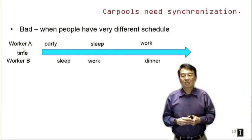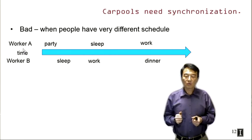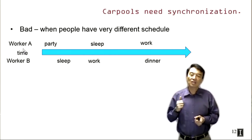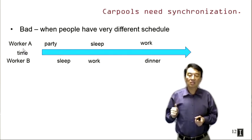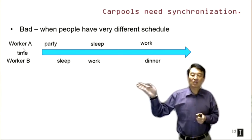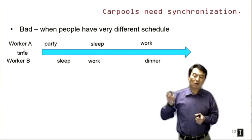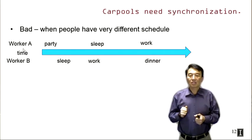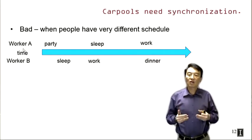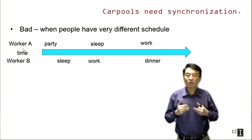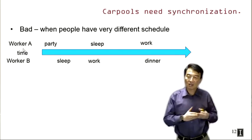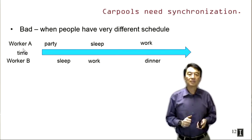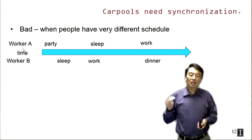In a bad case, worker A has a very different schedule than worker B — when B goes to sleep, A parties all night; when B needs to go to work, A wants to sleep; when B wants to go home for dinner, A is ready to go to work. With such drastically different schedules, it's very hard for worker A and worker B to agree on a common time to commute. Carpools therefore need synchronization — some negotiation so all co-workers agree on a common departure time.